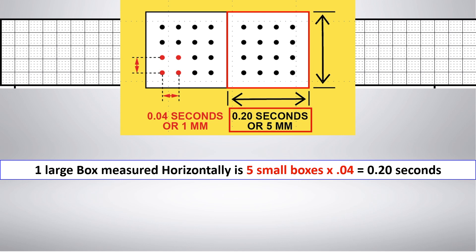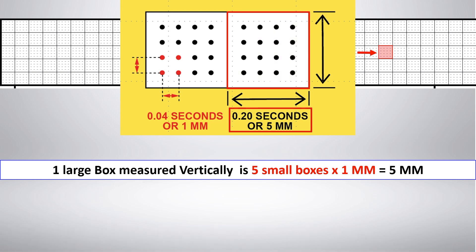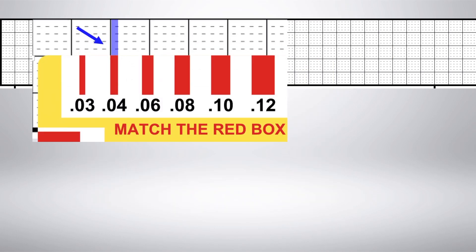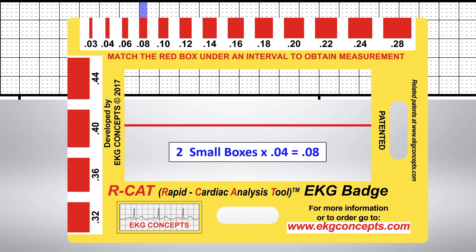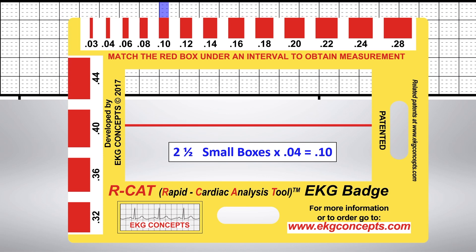One large box measured horizontally is 5 small boxes times .04, equaling .20 seconds. One large box measured vertically is 5 small boxes times 1 millimeter, equaling 5 millimeters. The EKG badge is designed and calibrated to accurately measure all cardiac intervals. The calibrated red boxes on the EKG badge make it simple to accurately measure cardiac intervals without the need to tediously count little boxes.